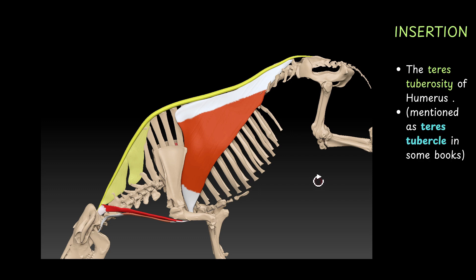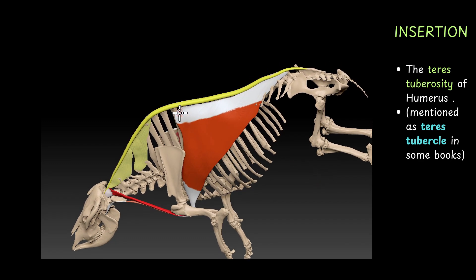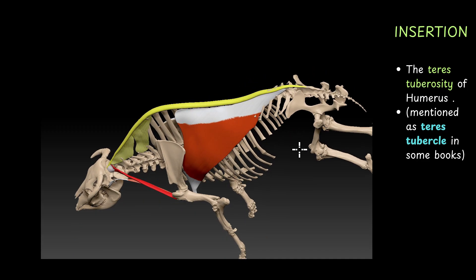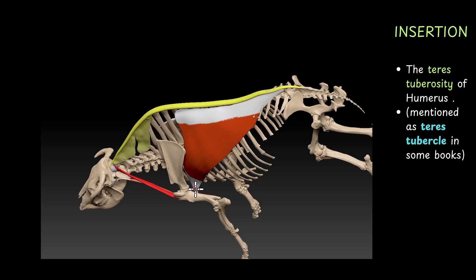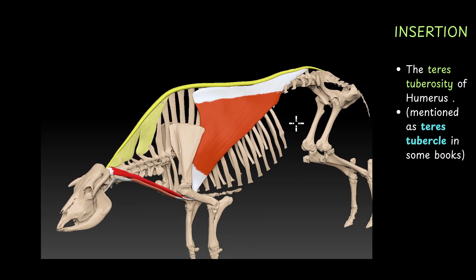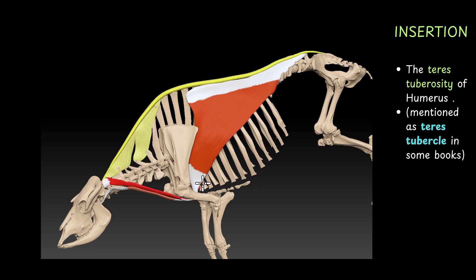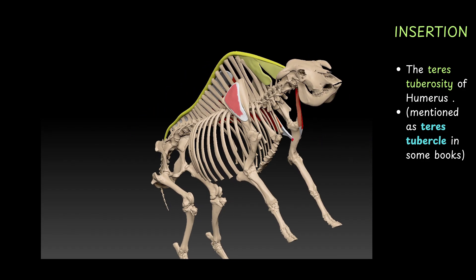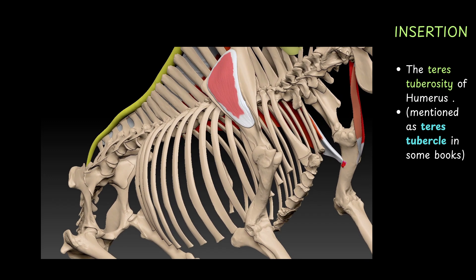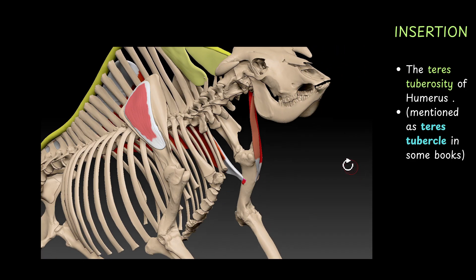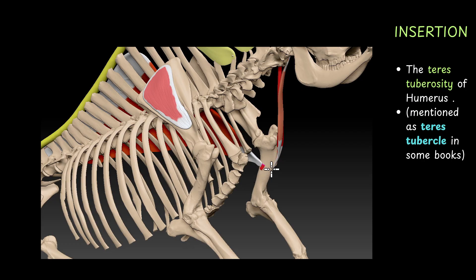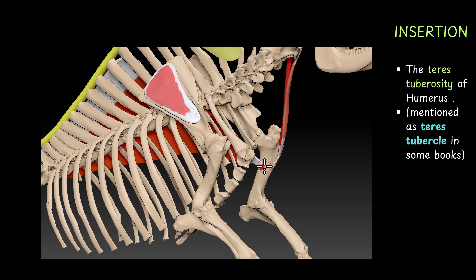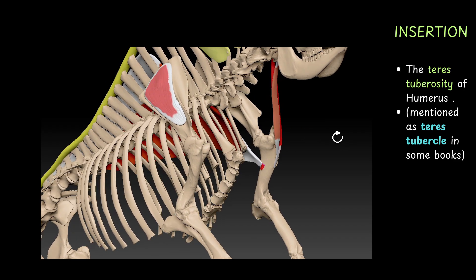Insertion: the insertion is into the teres tuberosity of the humerus. The origin is from the thoracolumbar spine, and the insertion is into the teres tuberosity of the humerus. This is the humerus — on the medial aspect you will find the teres tuberosity. This is the lateral aspect of the humerus, and the muscle inserts into the medial aspect. So this is the medial surface of the shaft of the humerus, and here you will find the teres tuberosity. Latissimus dorsi originates from the thoracolumbar spine and inserts into the teres tuberosity of the humerus.